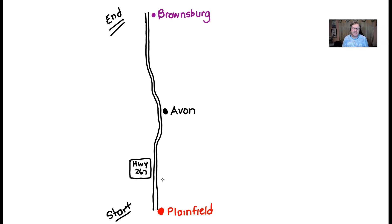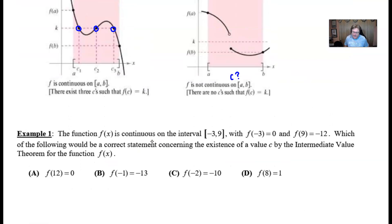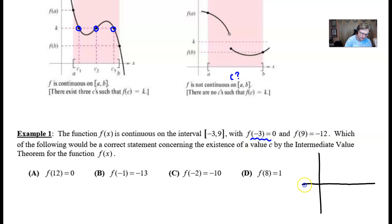Looking at our first example: the function f(x) is continuous on the closed interval [-3, 9] with f(-3) = 0 and f(9) = -12. Which of the following would be a correct statement concerning the existence of a value c by the Intermediate Value Theorem? A visual can really help here. f(-3) = 0 is an ordered pair with x-coordinate -3 and y-coordinate 0, so that point is located around here.